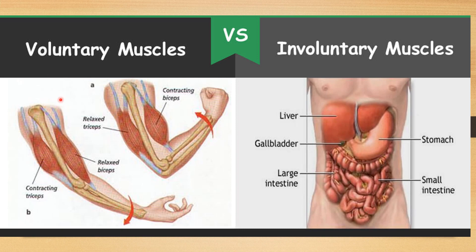The muscles of arms and legs are voluntary muscles. Whereas the actions performed by our stomach, intestine, liver, or heart are involuntary actions — that means they do not depend on our will. These actions are carried out automatically, and the muscles involved in involuntary actions are called involuntary muscles.